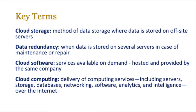The first one is cloud storage, which in simplistic terms means a method of data storage where data is stored on off-site servers. There's a term called data redundancy, which basically means that data is stored on several servers in case of maintenance or repair. So if one server goes down, data can still be accessed on another server and the user does not even know that something is wrong.